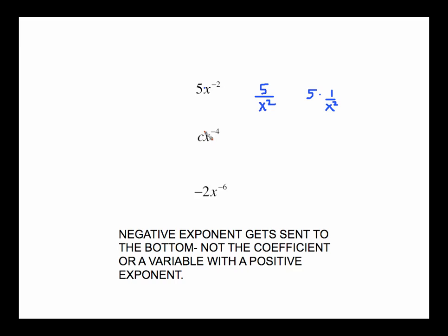A variable with a positive power is going to stay in the top, but x to the negative 4 is going to be sent to the bottom. A common mistake: this negative 2 is a coefficient — coefficients do not go anywhere. Negative 2 stays in the top of the fraction, but x to the negative 6 goes to the denominator. So the rule is: positive exponents stay up, coefficients stay up, negative exponents get sent to the bottom.